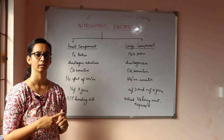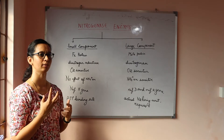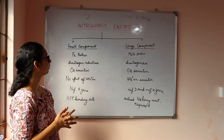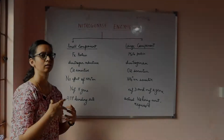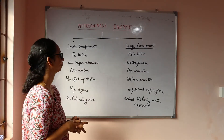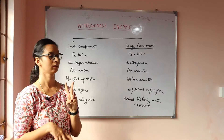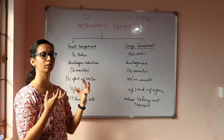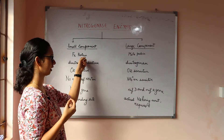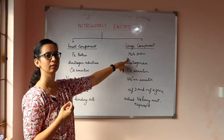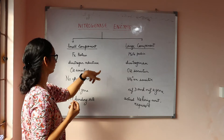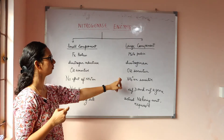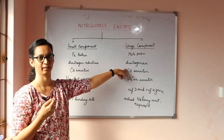Coming to nitrogenase — its function is to convert nitrogen to ammonia. It has two components: a small component and a large component. The major metal ions in the large component are iron along with molybdenum. The small component is also called dinitrogen reductase, and the large component is called dinitrogenase.